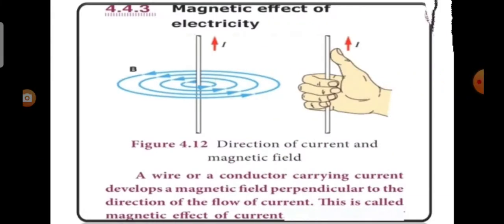A wire or conductor carrying current develops a magnetic field perpendicular to the direction of the flow of current. This is called magnetic effect of the current.